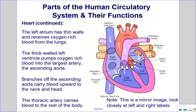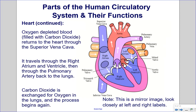Note: the diagrams are mirror images — look closely at the left and right labels. Oxygen-depleted blood, filled with carbon dioxide, returns to the heart through the superior vena cava, travels through the right atrium and ventricle, then through the pulmonary artery back to the lungs, where carbon dioxide is exchanged for oxygen and the process begins again.